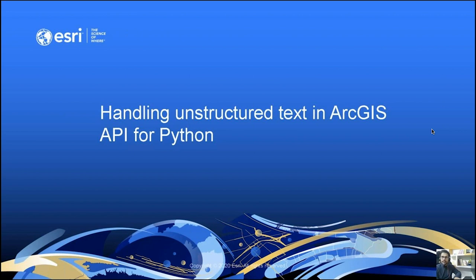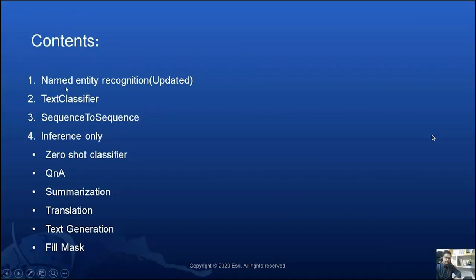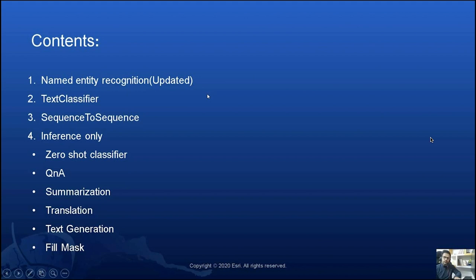Hi, everyone. My name is Akhil Negi and I am a data scientist at Esri's New Delhi R&D Center. I am also a developer on ArcGIS Python API. Today I will be talking about handling unstructured text data in ArcGIS API for Python version 1.8.3. Let's look at the details of updates and new additions made to the 1.8.3 release. We have made some updates to the named entity recognition model, added a transformer backend, added text classifier, sequence-to-sequence model, and also added a few inference-only models which do not need to be trained and can be used out of the box.